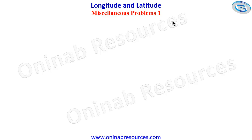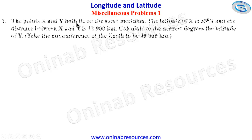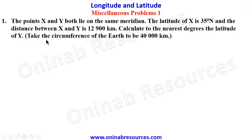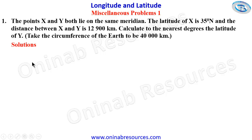We start with Problem 1. The points X and Y both lie on the same meridian. The latitude of X is 35 degrees north and the distance between X and Y is 12,900 kilometers. Calculate to the nearest degree the latitude of Y. Take the circumference of the Earth to be 40,000 kilometers.